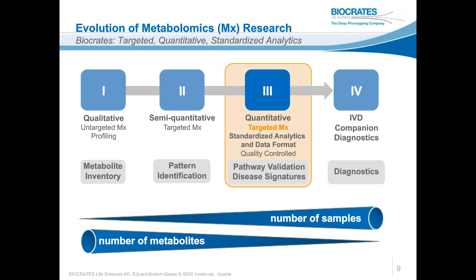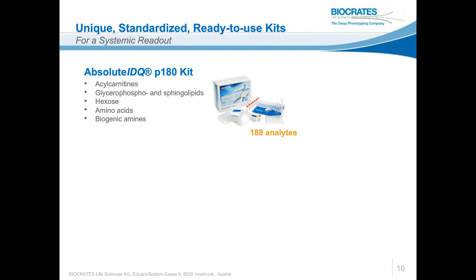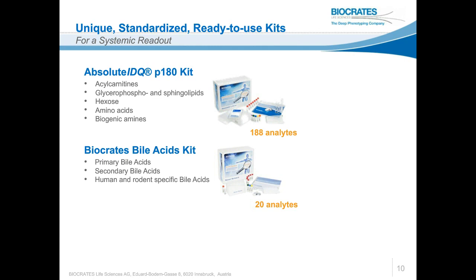Biocrates is known for its kits. The first kit launched was the absolute IDQ P180 kit, enabling quantitative analysis of close to 190 metabolites comprising acylcarnitines, a broad class of lipids, hexose, amino acids, and biogenic amines. The second kit, the Biocrates bile acid kit, contains 20 analytes of primary and secondary bile acids for human and rodent analysis. It is focused on investigating microbiome influence, which is strongly linked via the gut-liver-brain axis to metabolic disorders, neurology applications such as Alzheimer's disease, and liver function readout.